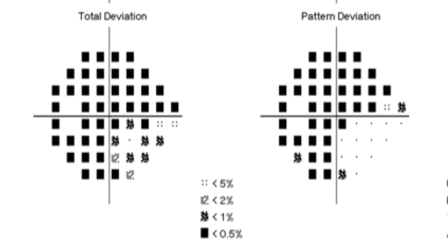If the total deviation plot is abnormal, you should look at the pattern deviation plot to decide if the defect pattern is generalized, more or less equal across the entire test region, or if it is focal, that is, some regions were less well seen than others.